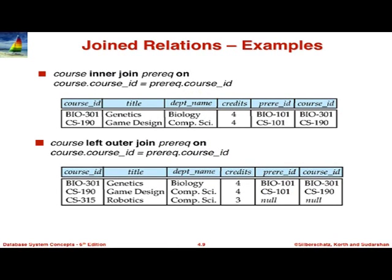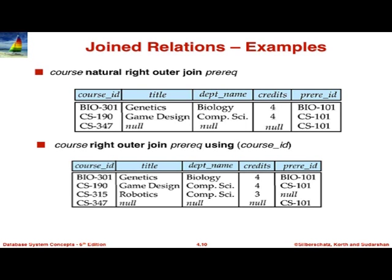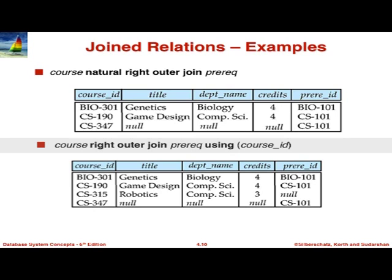The right way to do it is: course left outer join prereq on that condition. Variants include course natural right outer join prereq, course natural left outer join prereq, and course right outer join prereq using course_id — which in this case is the same as natural join because that is the only common attribute.